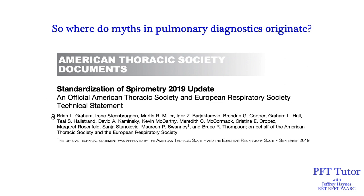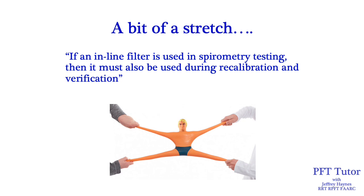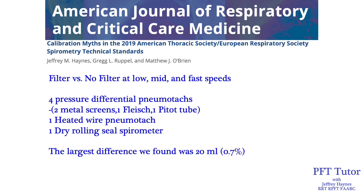Where do myths in pulmonary diagnostics originate? Sometimes these myths come from the ATS-ERS technical statements themselves. For example, in the 2019 spirometry standard, there is the statement that if an inline filter is used in spirometry testing, it must also be used during calibration and verification. We studied this idea and had it published in the American Journal of Respiratory and Critical Care Medicine. We compared filter versus no filter at low, medium, and fast speeds using four pressure differential pneumotachs — two metal screens, one flow-through pneumotach, one with a pitot tube — plus one heated wire pneumotach and one dry rolling seal spirometer. The largest difference between calibrating with and without a filter was 20 ml, or 0.7%. Most of the time, we saw no difference at all.